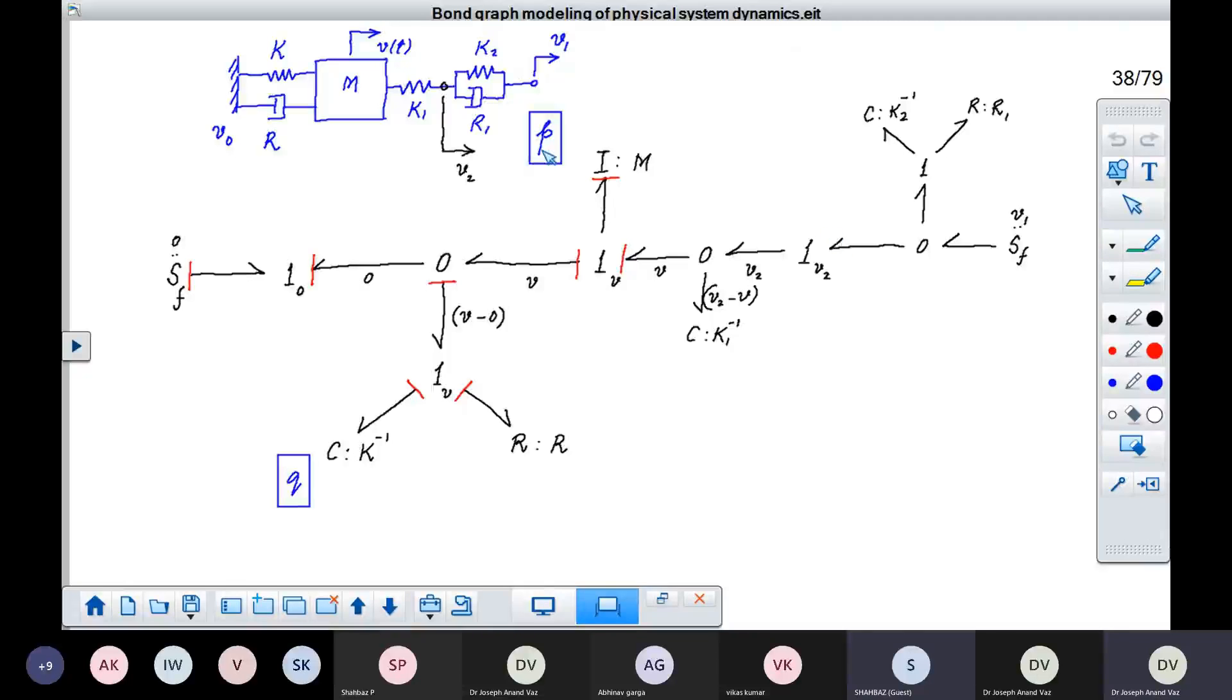And we show its motion here as this one junction with suffix V2 representing the flow V2. And then you take the relative motion between this end and this end in order to model the spring. So this relative motion is equal to V2 minus V, which is already the velocity of this mass. And here you can assign the C element. So that is done.